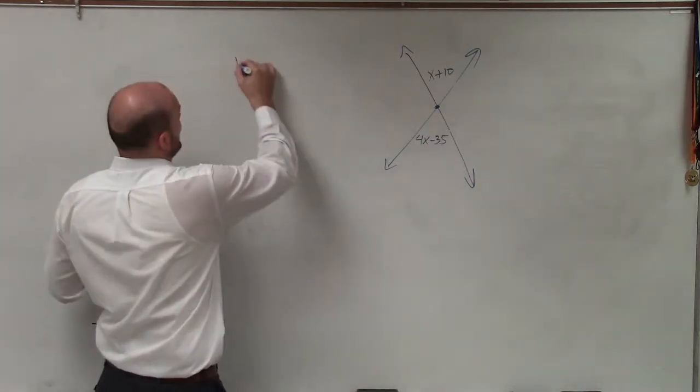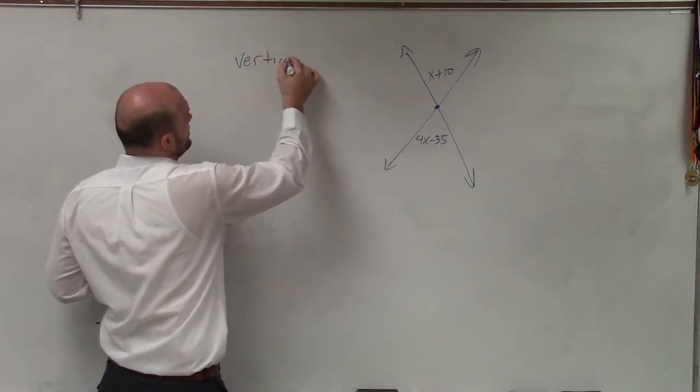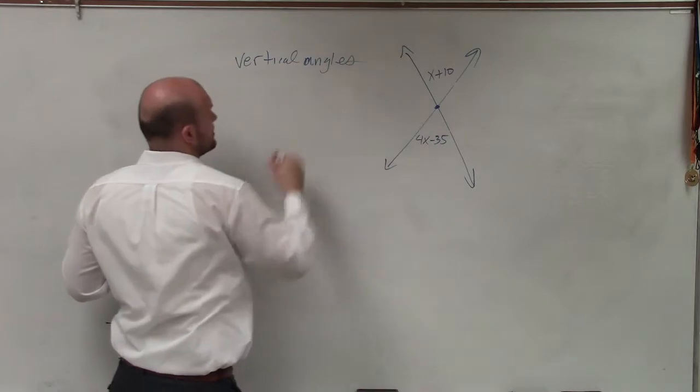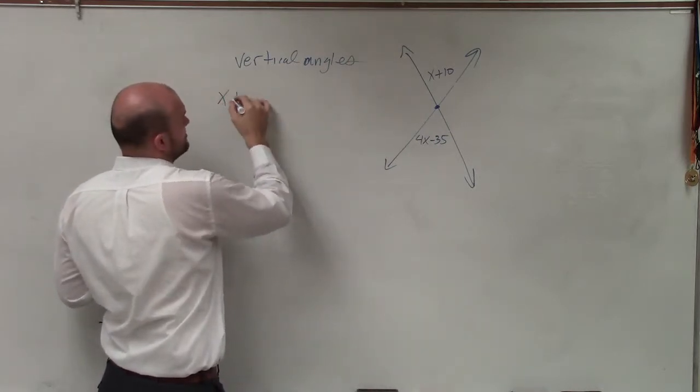And vertical angles are equal in measure, so therefore all I can simply say is x plus 10 is equal to 4x minus 35.